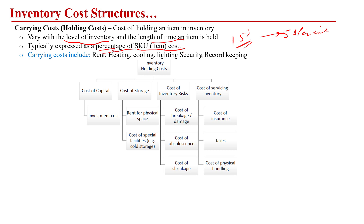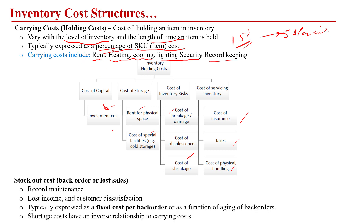To calculate the holding cost per SKU, we consider factors such as: rent cost if the facility is on a rental basis, heating or cooling costs, lighting, security, record keeping, spoilage risk while storing, shrinkage, wastage, cost of insurance, tax, physical handling of material, and even the cost of buying a storage facility. These factors together are used to calculate the holding cost per unit or carrying cost per unit.